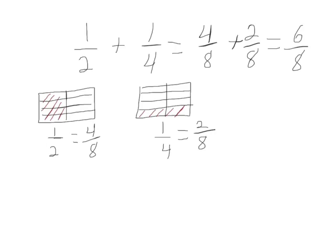I know that I can make larger units out of my eighths because I have one-fourth right here, and I have another fourth — two-eighths equals one-fourth — so my six-eighths is equal to three-fourths. So one-half plus one-fourth equals three-fourths.